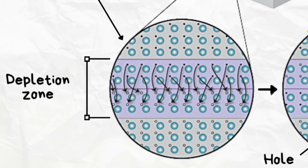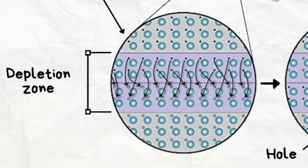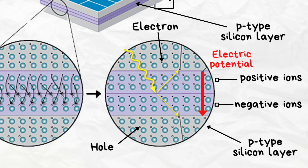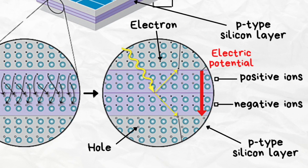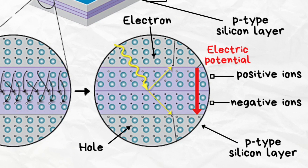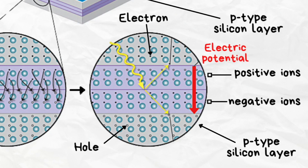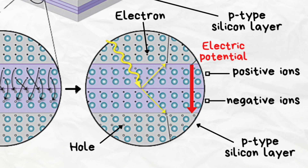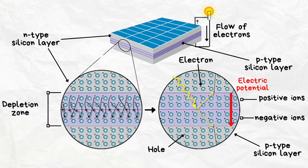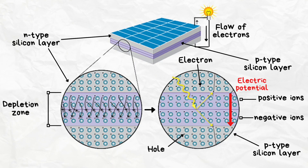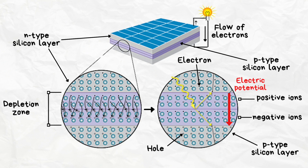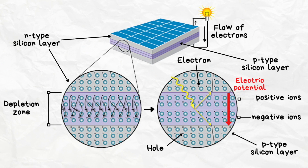This causes the N-type layer to be slightly positive, while the P-type layer will be slightly negative. When photons hit the solar cells, they penetrate into the depletion zone and provide enough energy to knock electrons off, which are then attracted to the N-type layer. This difference in electron concentration results in a potential difference across the two layers. Now, when an external circuit is connected between the two layers, the electrons start flowing to the P-type layer via the circuit and generate current.